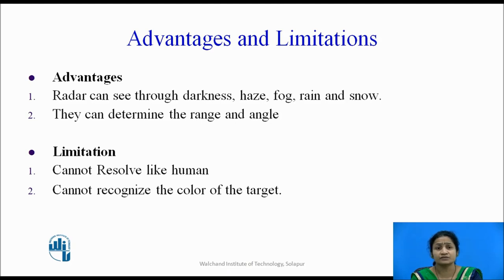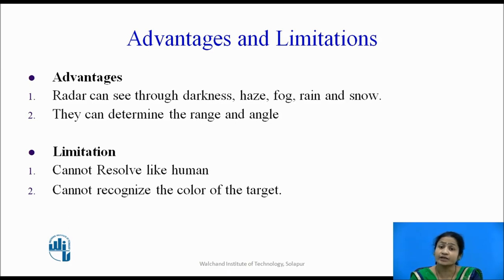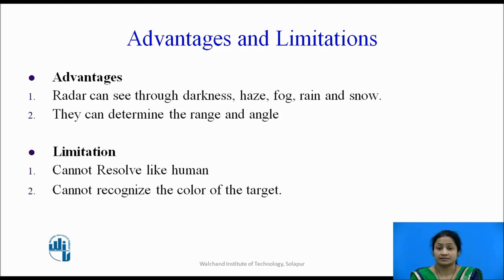What are the limitations of using this radar? As for every advantage there is a disadvantage: the limitations of the radar system are that it cannot resolve like a human eye — we can immediately determine what the target is, whether it is an aeroplane or a ship, with our naked eyes. But the radar cannot detect exactly what the target looks like. It can determine the range and the angle of the particular target, but it cannot resolve the color of the target. These are the disadvantages of the radar system.